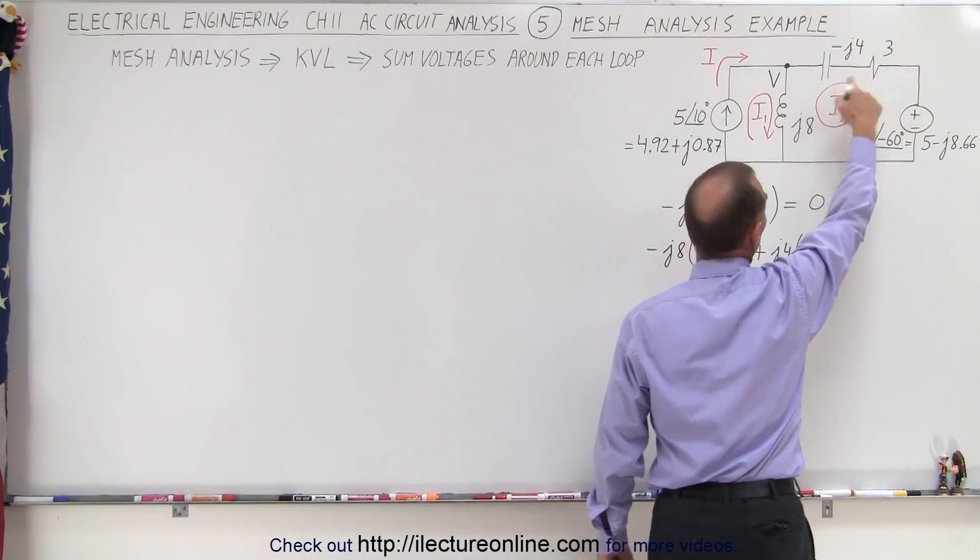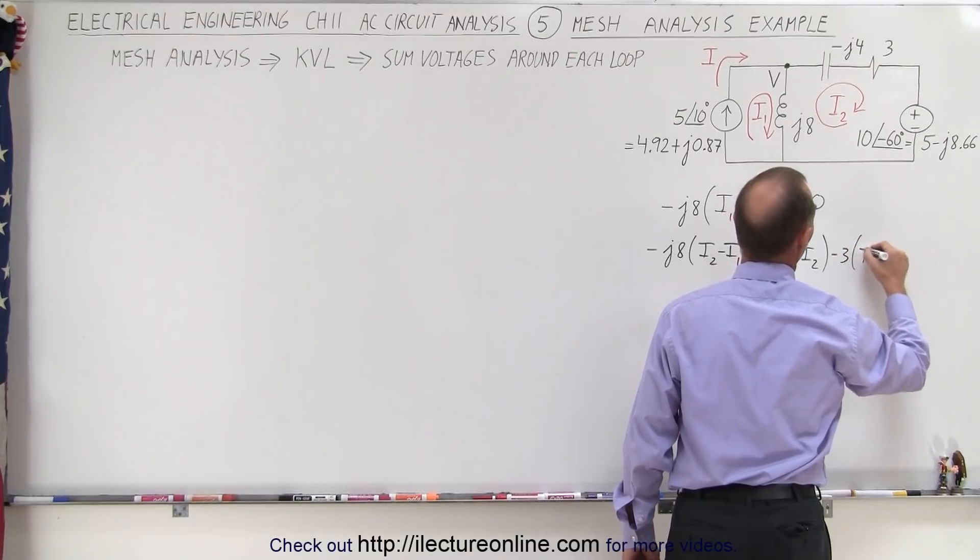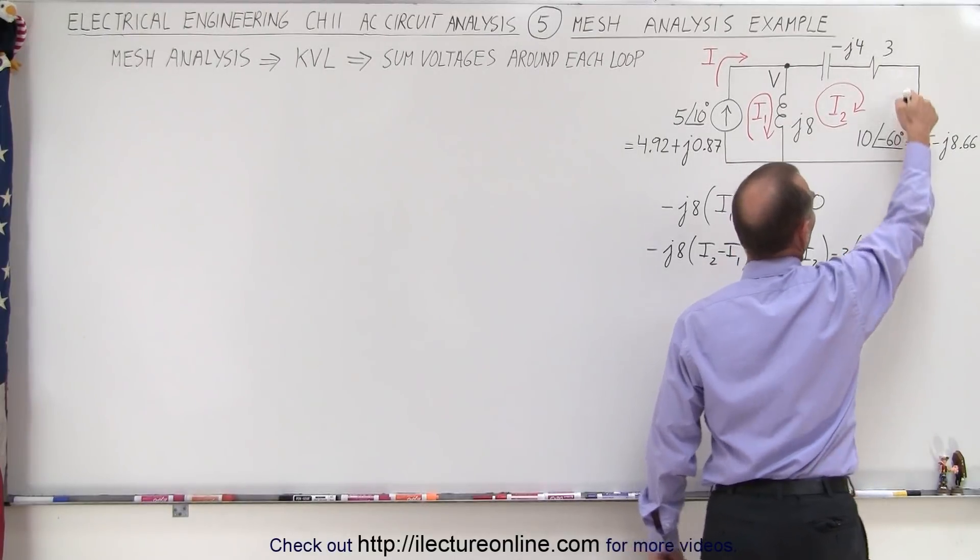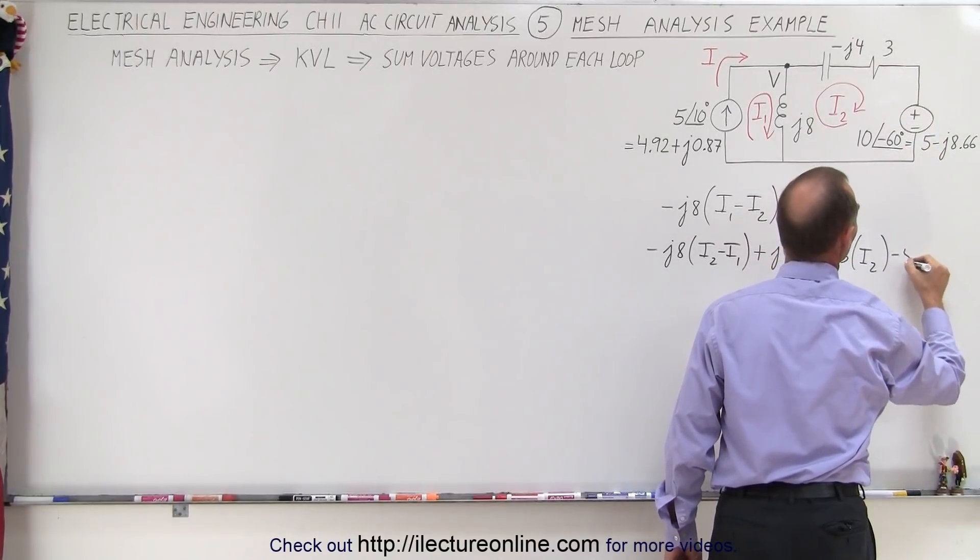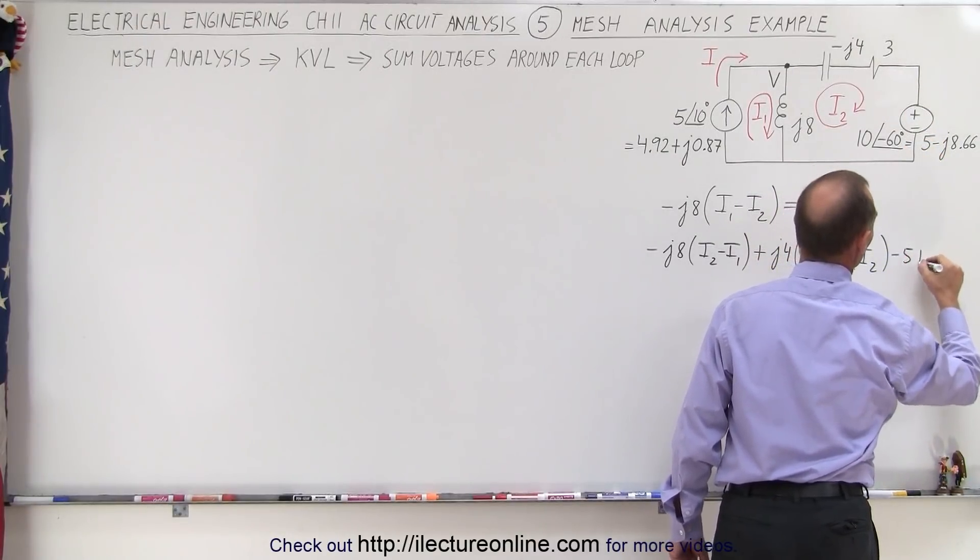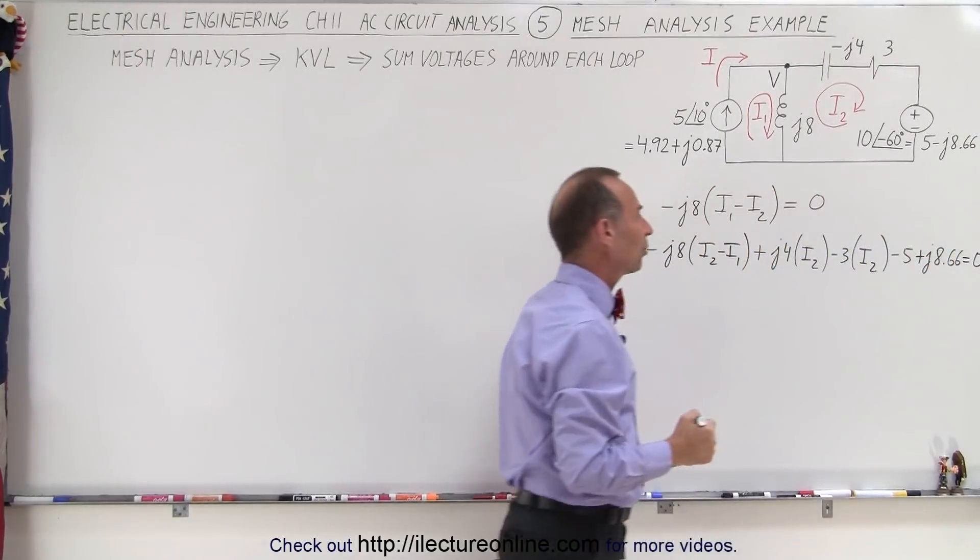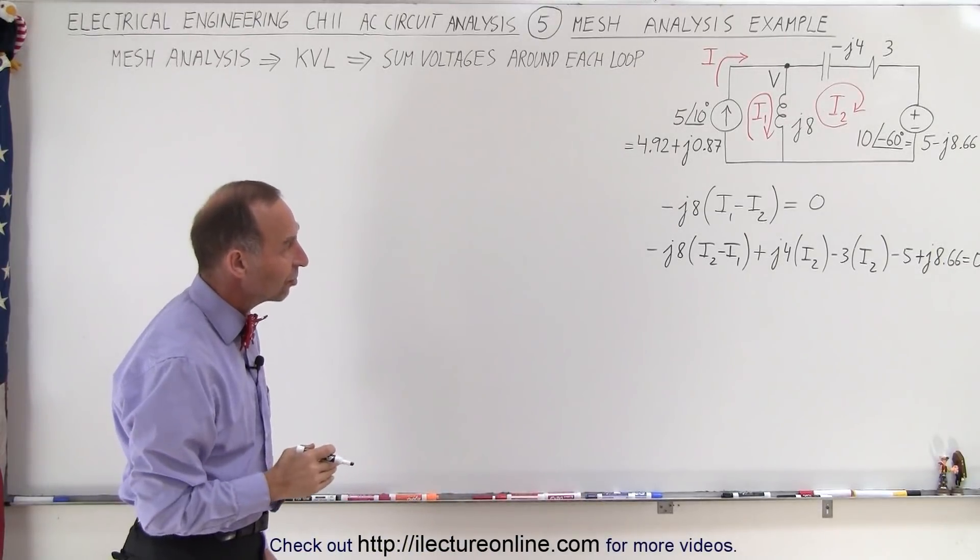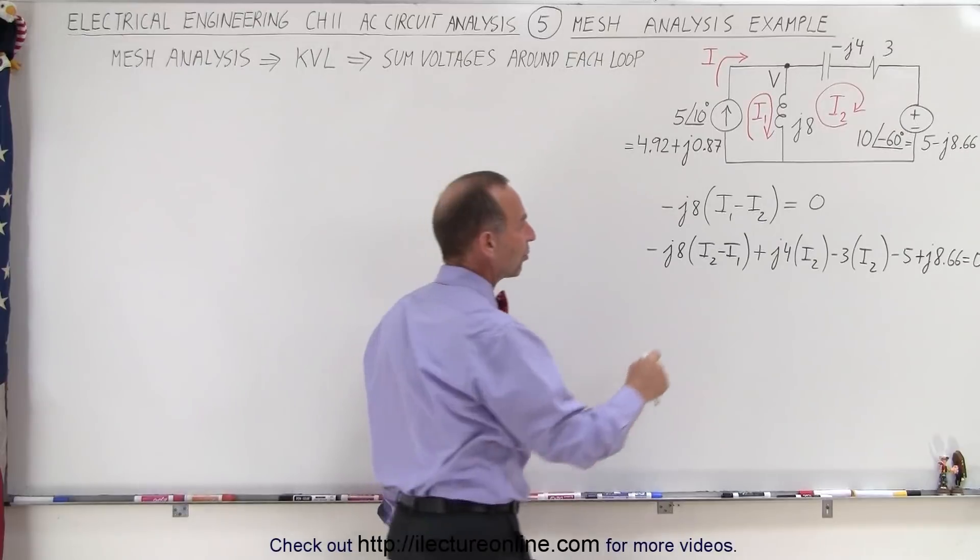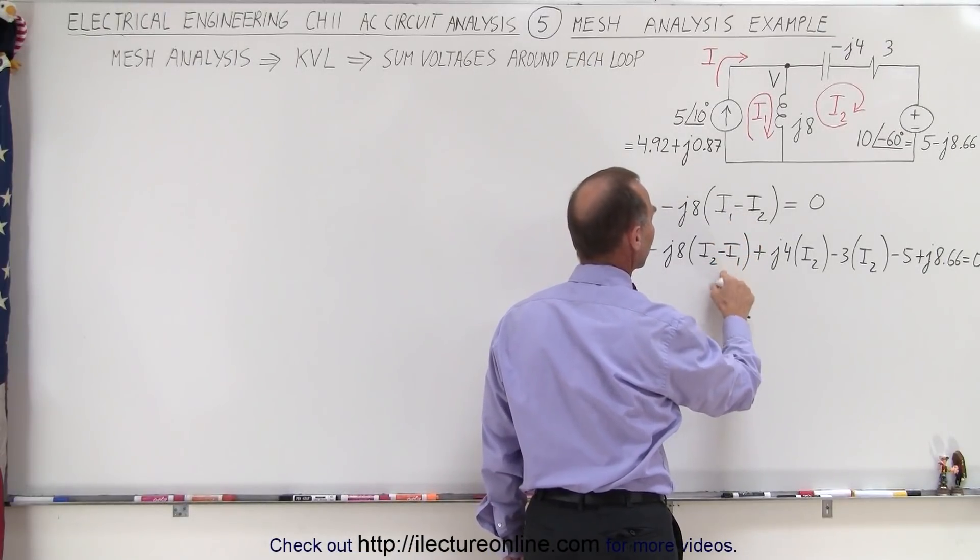And now we have voltage drop across the resistor which is minus 3 times I2. And then we go across this voltage source but in the opposite direction so that would be a minus 5 and minus times the minus which is plus J8.66 which adds up to zero since we're around the entire loop. So now we need to solve those simultaneously, we would solve this for I1 and plug that into our equation right here.